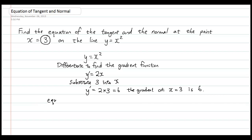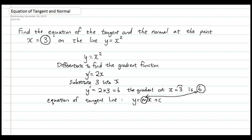For the equation of the tangent line, we use the equation of a straight line: y equals mx plus c. We substitute m as 6, because that is the gradient at that point, and substitute 3 into x. We don't know c yet, but we know that when x equals 3, y equals 9, because y equals x squared, so y equals 3 squared, which is 9.